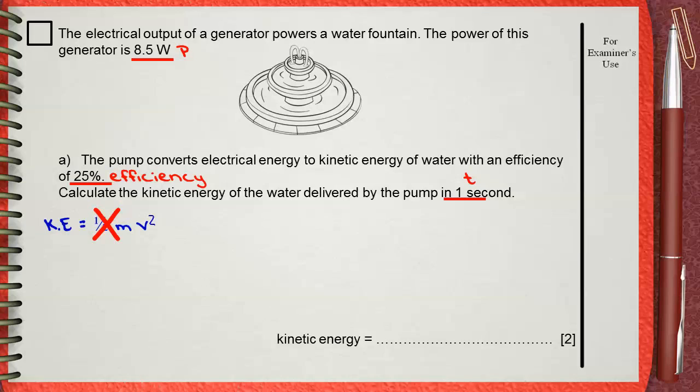Kinetic energy is the output energy from the pump. In question A, it says that the pump converts electrical energy to kinetic energy. Power equals energy over time is the most suitable equation for our case. By a small rearrangement, energy equals power multiplied by time. This means 8.5 times 1. Energy is 8.5 joules.